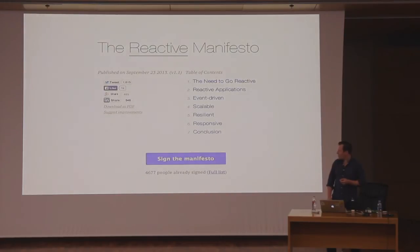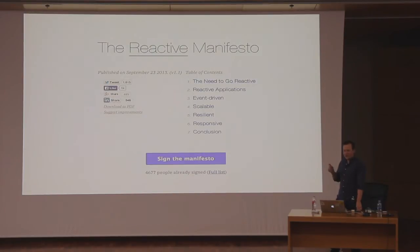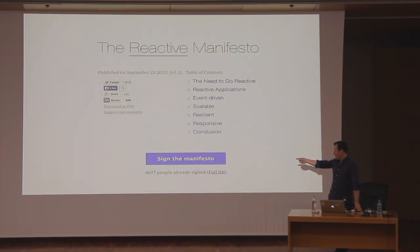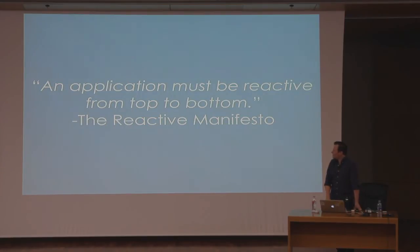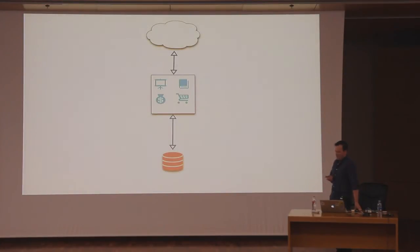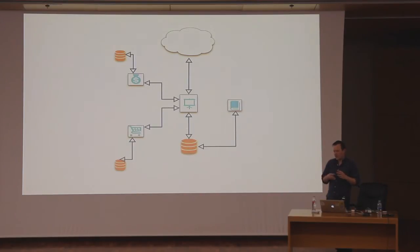TypeSafe put together these tenets into what they call the reactive manifesto — a website online where you can sign it with your Facebook or Twitter account. As of when I took the screenshot, it had 4,677 signatories. One of the points in the manifesto is that an application must be reactive from top to bottom, which implies that if we take the original e-commerce example, we have to think about not just each individual service node, but how these systems are communicating with each other.